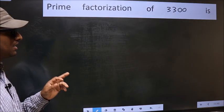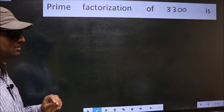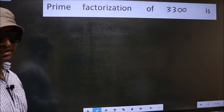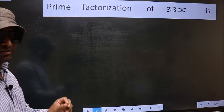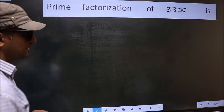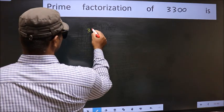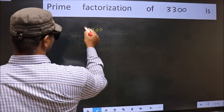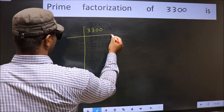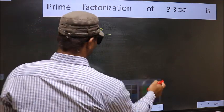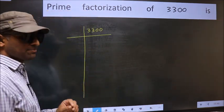Prime factorization of 3300. To do prime factorization, first we should frame it in this way. 3300. This is your step 1.